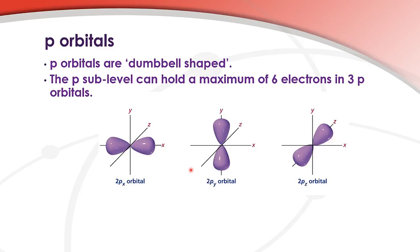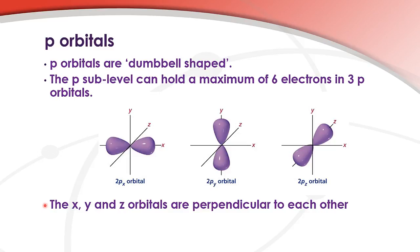The x, y, and z refer to the axis along which the orbital lies. So the 2px orbital lies along the x axis, the 2py orbital lies on the y axis, and the 2pz orbital lies on the z axis. The x, y, and z orbitals are perpendicular to each other. Each p orbital can hold 2 electrons and there are 3 p orbitals, so the p sub-level can hold a maximum of 6 electrons.